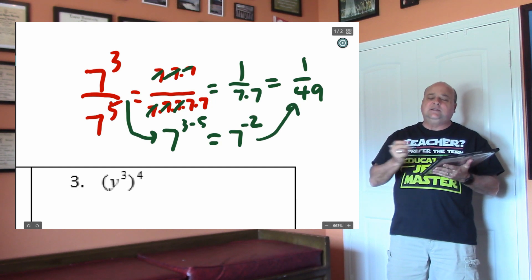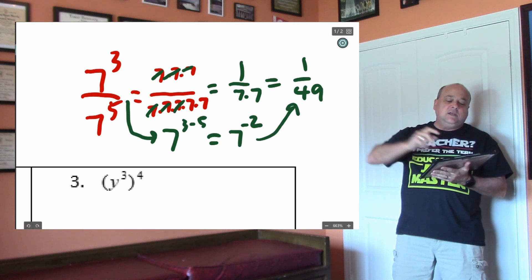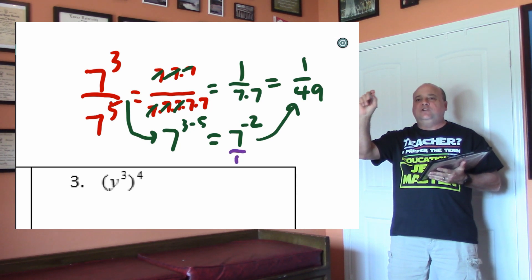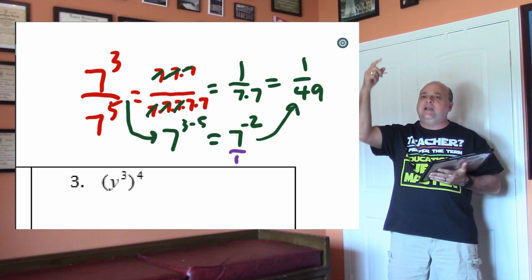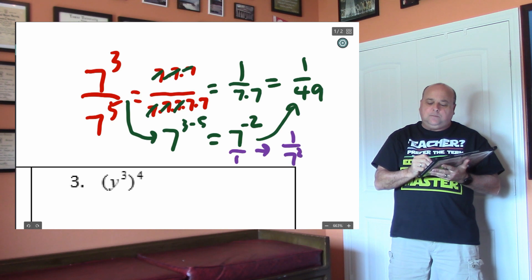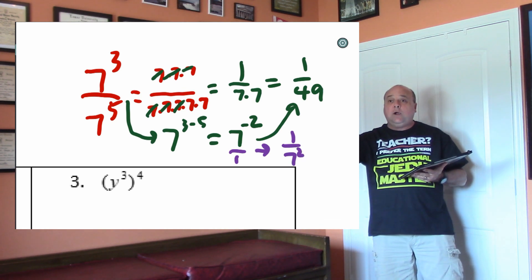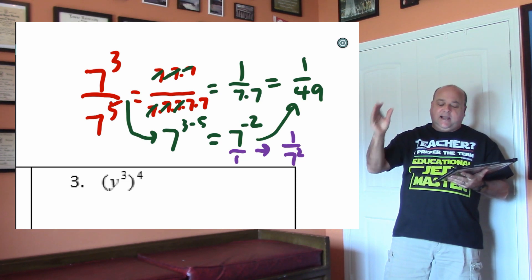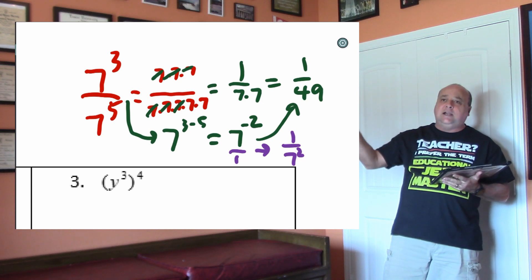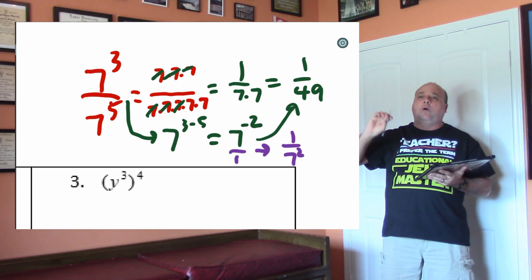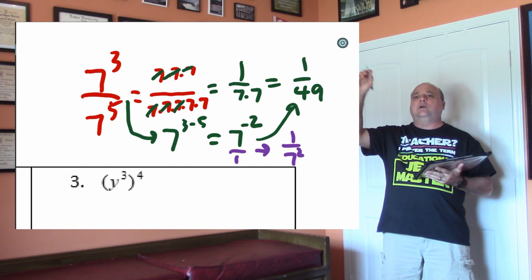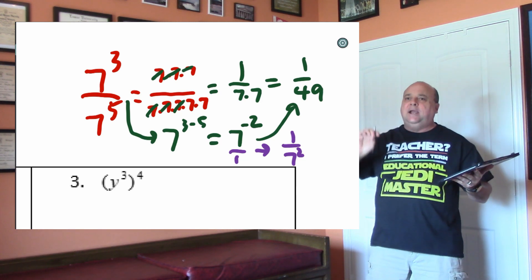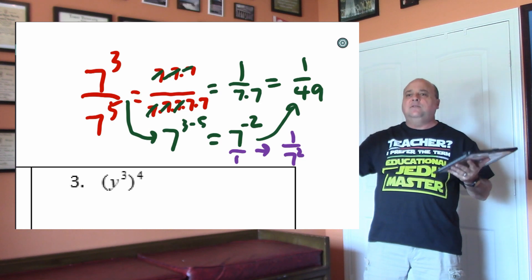7 to the negative 2 is the same as 1 over 49. When you have a number without a fraction, technically it's over 1. That 7 to the negative 2 is telling you that the two 7s should not be on the top of the fraction — they should be on the bottom. The negative exponent does not make the answer negative. It means the base is in the wrong part of the fraction. Whenever you move the base across the fraction bar, the sign of the exponent will flip.